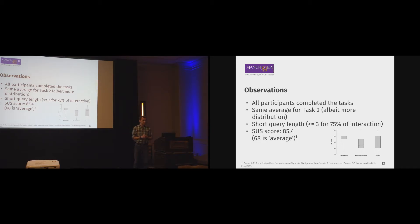We also found out that users tend to use a very short query length for most of the interaction - shorter than three words - which looks more like keyword search than actual expressing of the intent using complicated sentences. Our SUS score after evaluating the questionnaire was 85.4, and according to a normative study performed by Jeff Sauro with over 500 similar systems, 68 is the average.